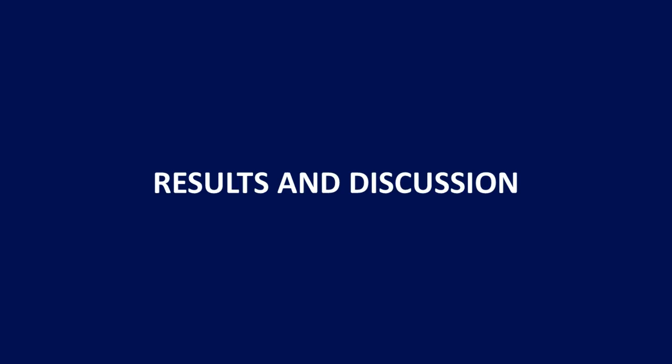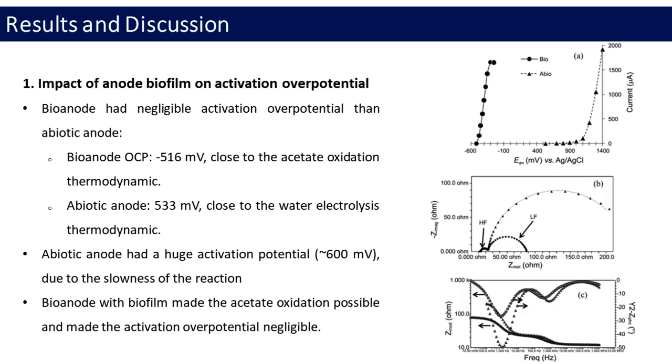Now I would like to move on the third part. Results and Discussion. First, the result from experiments show us the impact of anode biofilm on activation over potential. Figure shows, A is anode polarization curves, B is Nyquist plots, and C is Bode plots. The abbreviation LF indicate low-frequency, HF indicate high-frequency.